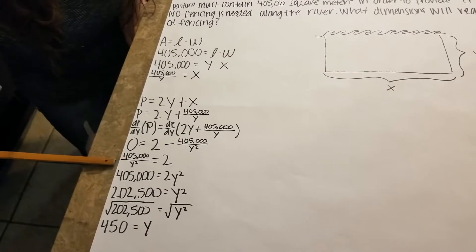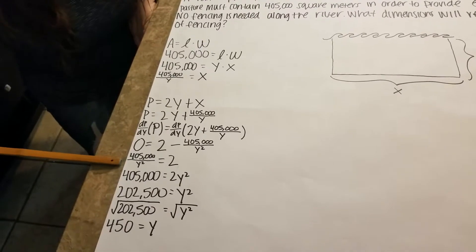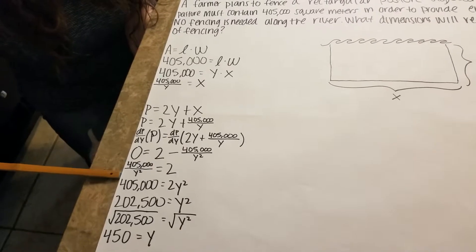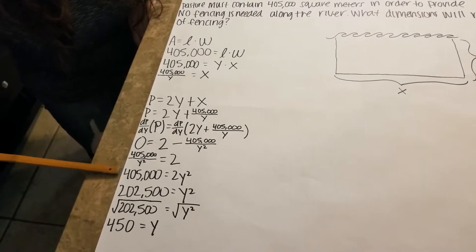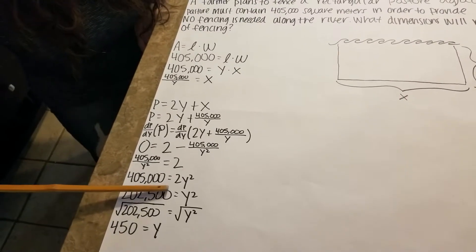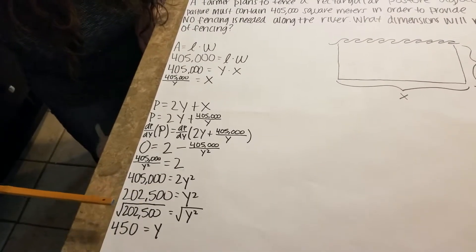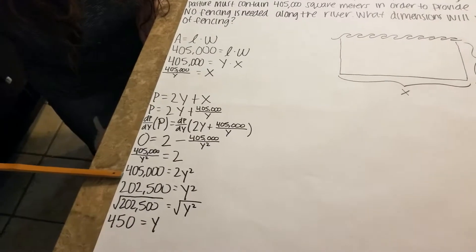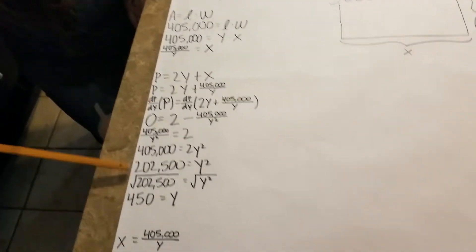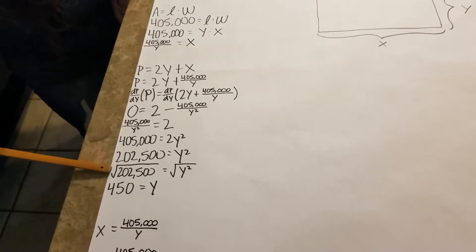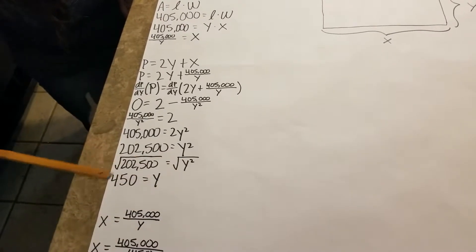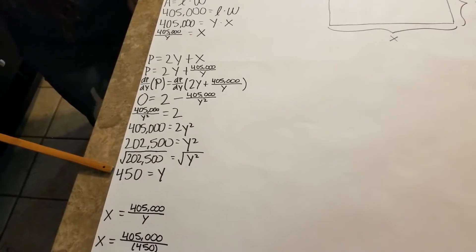Now we're going to work with it algebraically to simplify it to get the value for Y. When we do this, we will get 405,000 over a positive Y squared equals 2. 405,000 equals 2Y squared. And now when we divide 405,000 by 2, we get 202,500 equals Y squared. We're going to take the square root of both sides to get rid of the square and we get 450 is equal to Y.